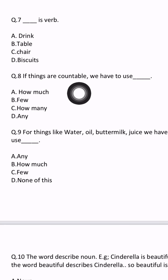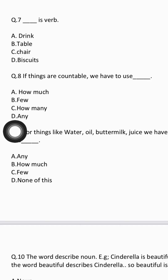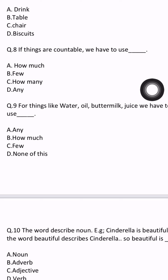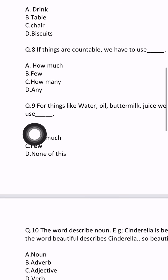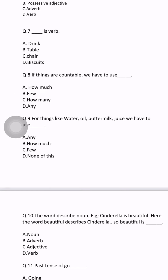Question number 8: if things are countable, we have to use 'how many.' If things are there that we can count, we use how many — not how much. Countable things equals how many; uncountable things like liquid equals how much. For things like water, oil, buttermilk, juice — which are uncountable liquids — we have to use 'how much.'